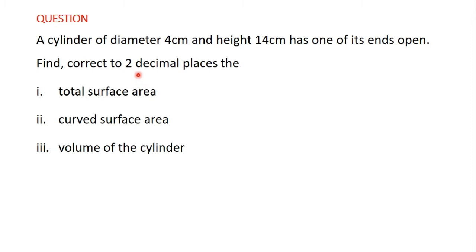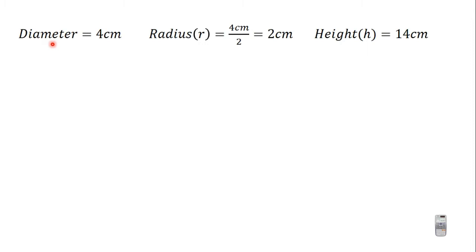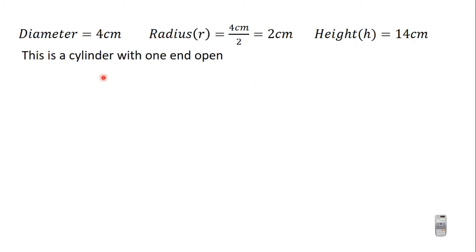The diameter is 4 centimeters, which means the radius is going to be 4 centimeters divided by 2, since radius equals diameter divided by 2. So the radius is 2 centimeters and the height is 14 centimeters.